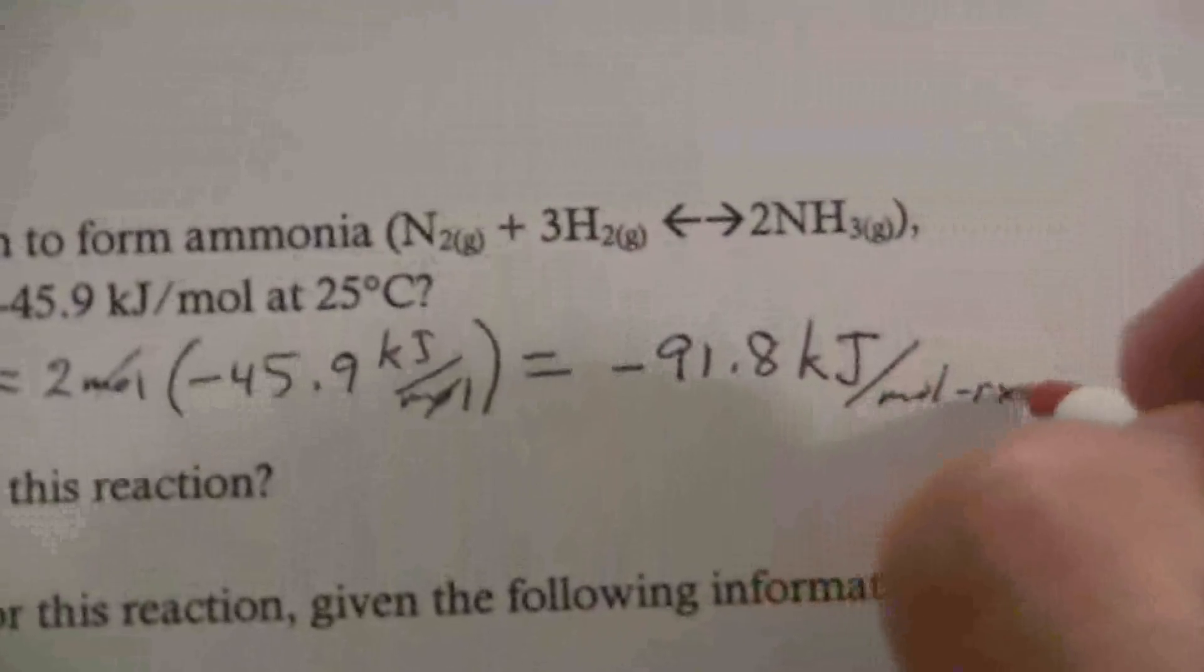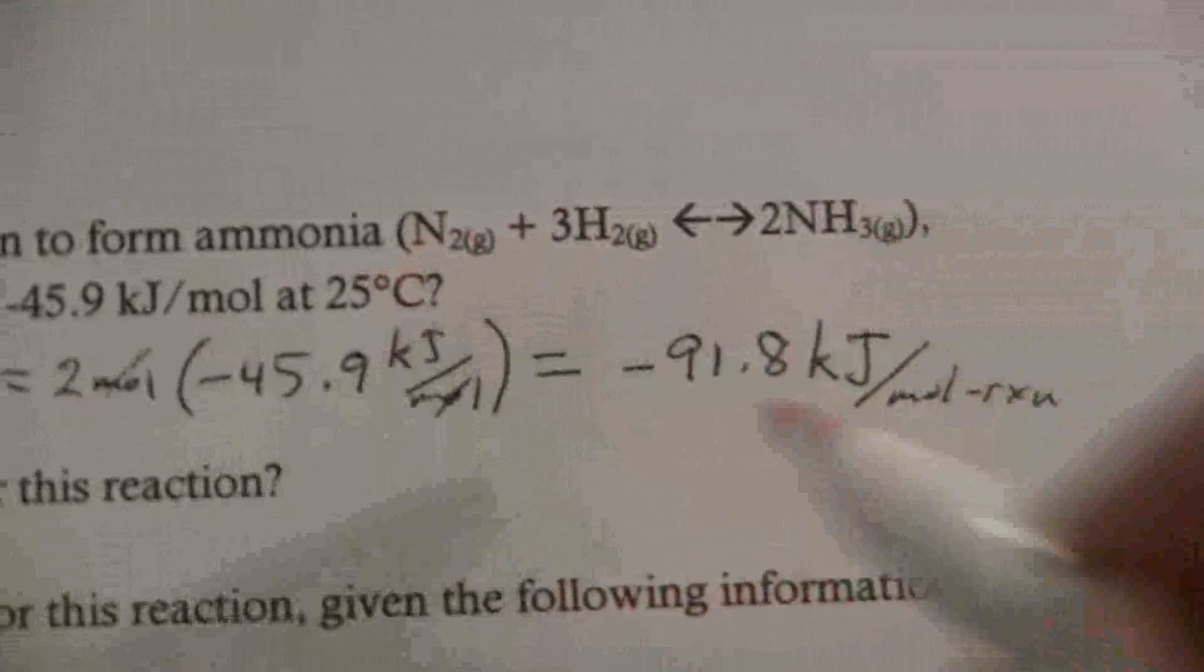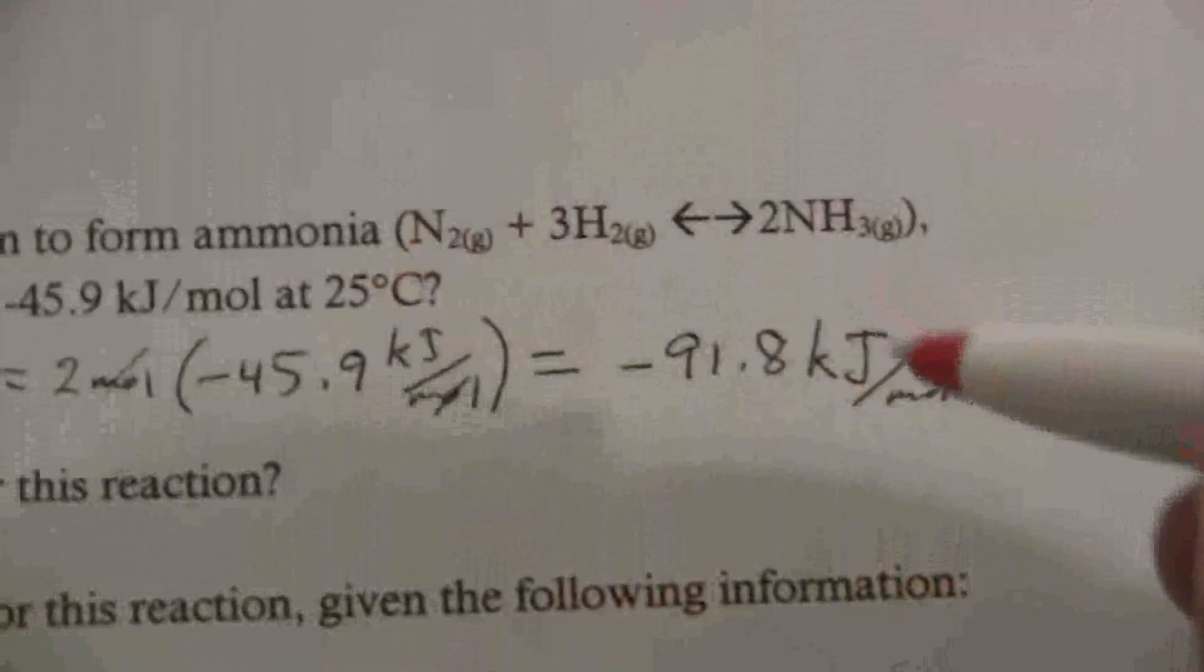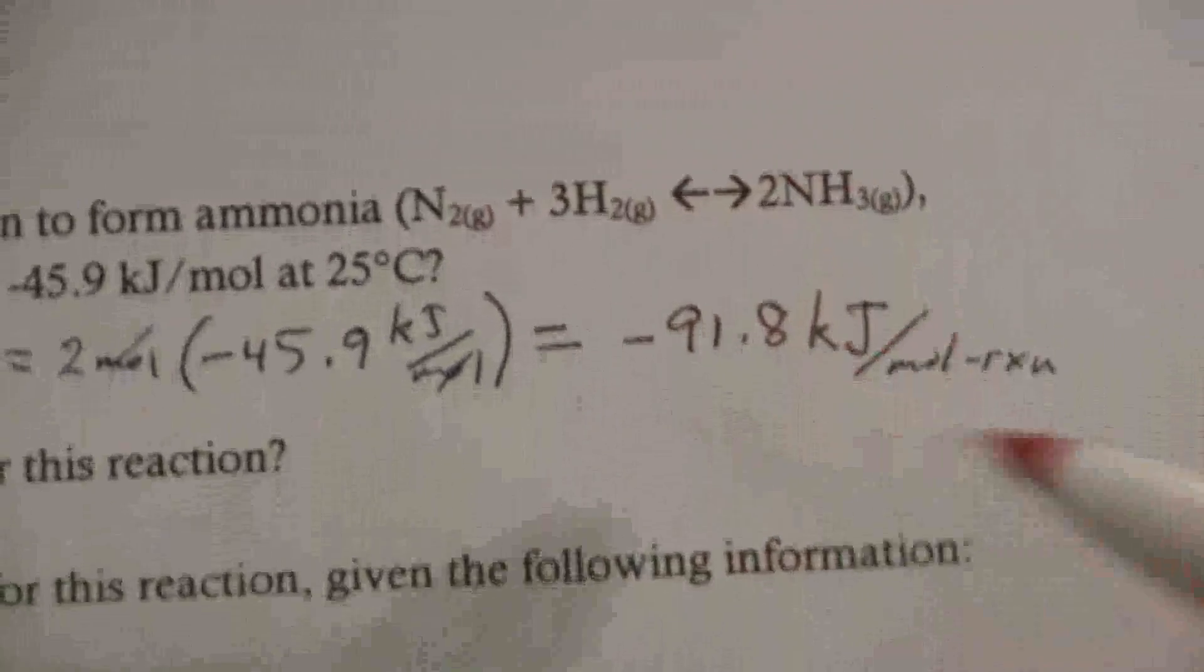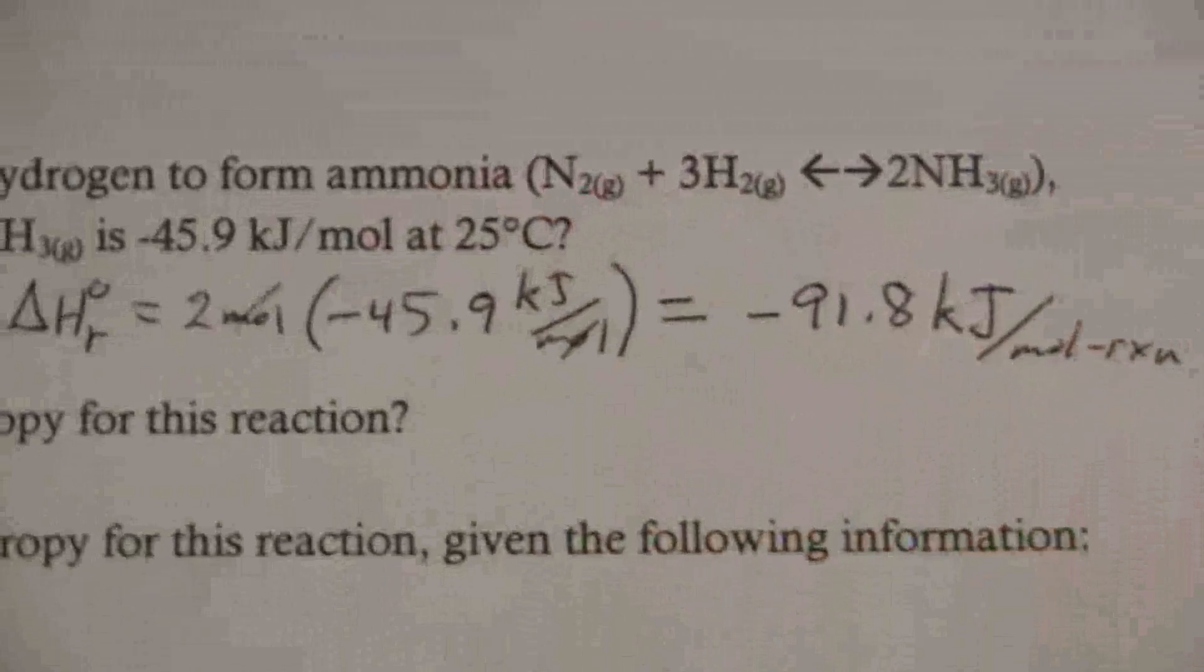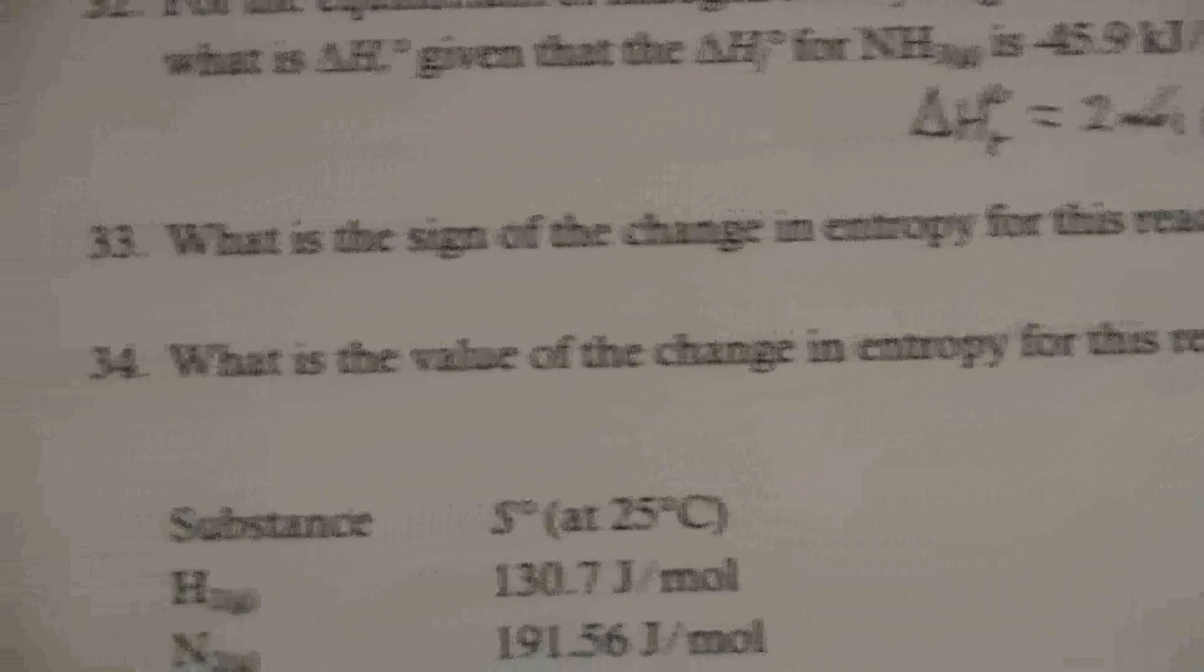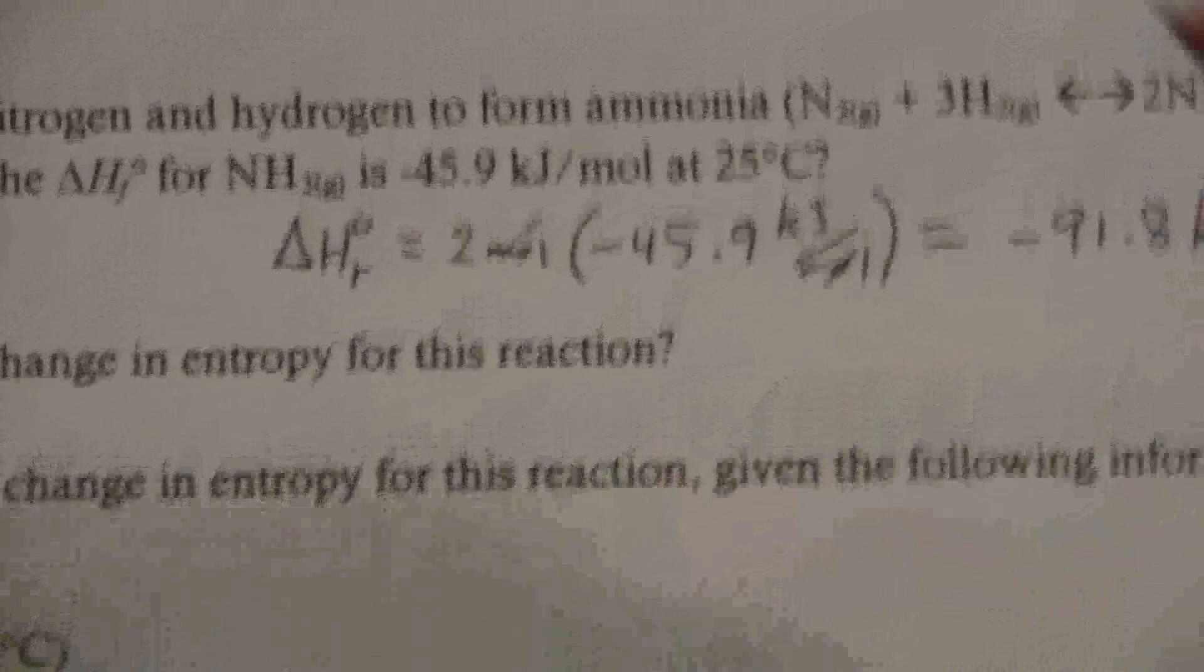So that way it's just saying this reaction gives off that many kilojoules. Alright, so moving on, what is the sign of the change in entropy for this reaction.